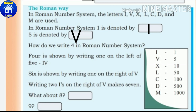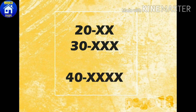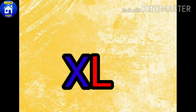Two I's after V makes 7 — that is VII. 8 is shown by writing three I's on the right of V — that is VIII. 10 is shown by X.